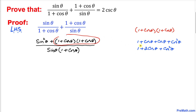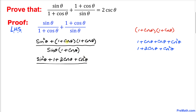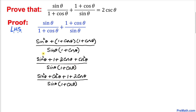Therefore we can replace that part with this simplified form, so our numerator becomes sine squared theta plus 1 plus 2 cosine of theta plus cosine squared of theta, divided by sine of theta times 1 plus cosine of theta.